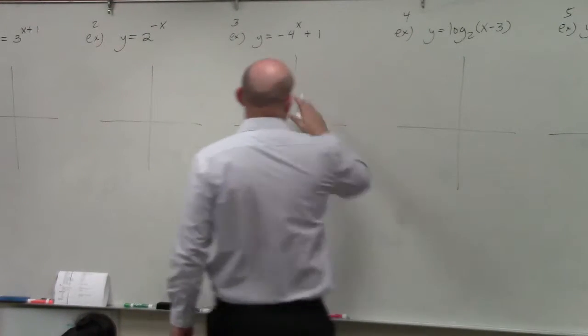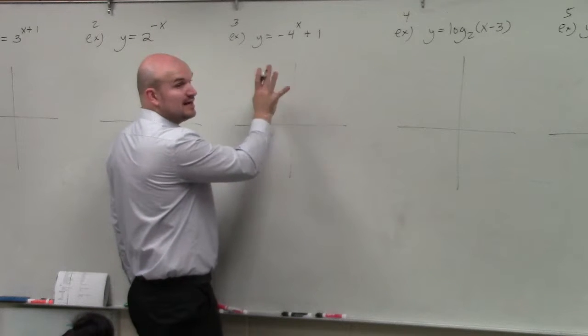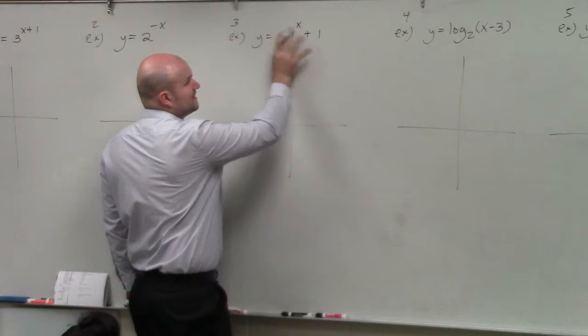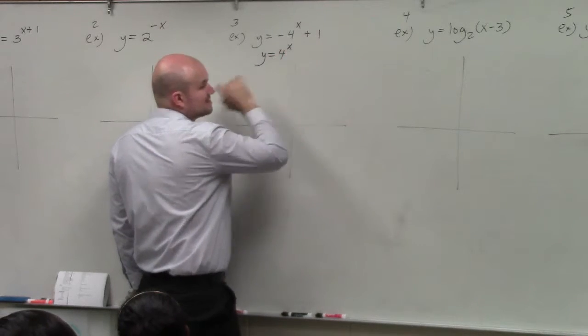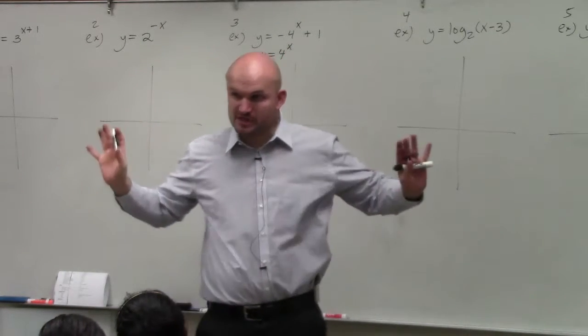The main important thing, guys, is just to identify the general graph without transformations. So if we kind of take away everything, we'd have y equals 4 to the x, right? If we take away all the transformations.